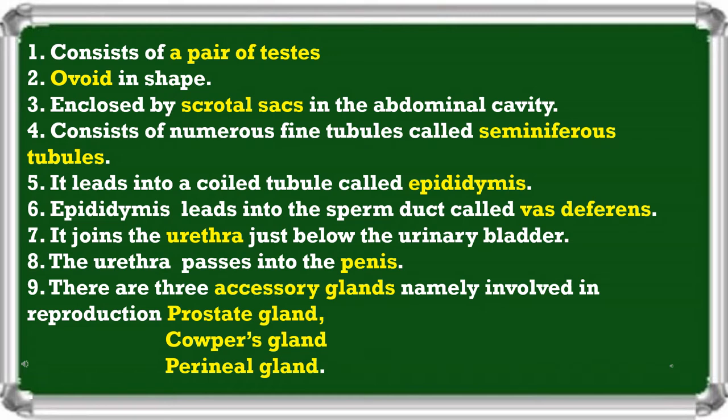So to summarize, the male reproductive system has a pair of testes, which are ovoid in shape and enclosed by a scrotal sac. They have fine tubules called seminiferous tubules, which lead to the epididymis. The epididymis leads to the vas deferens, which joins the urethra just below the urinary bladder, and the urethra passes into the penis. Three glands support reproduction.